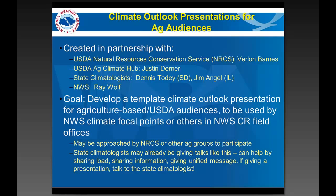Justin Derner noted that ag audiences often need specific information regarding current climate conditions and projections, especially for the growing season, applicable to that individual rancher or farmer. More coarse-level predictions from the National Drought Mitigation Center's Drought Monitor or Climate Prediction Center maps can be difficult to apply. More targeted information from state climatologists, the National Weather Service, and NOAA helps engage producers and makes them feel the information is directly applicable to them, and a uniform template is fantastic for delivering consistent information across the region.